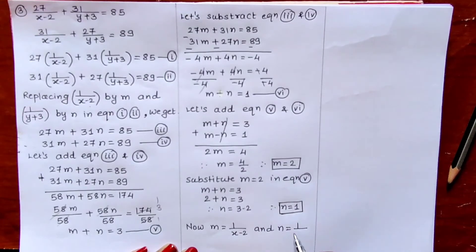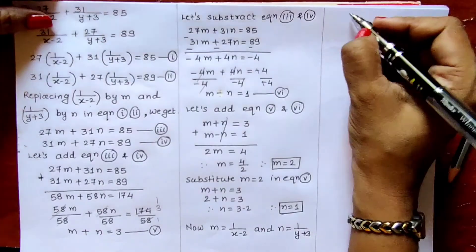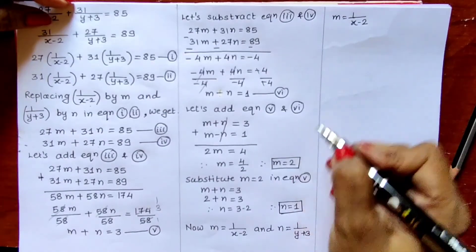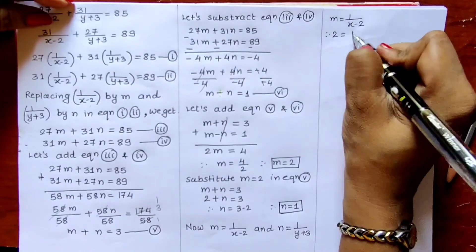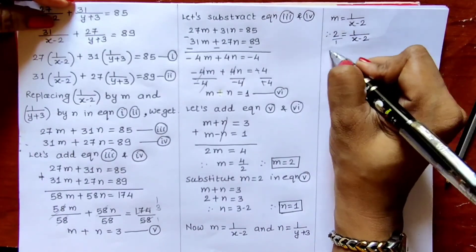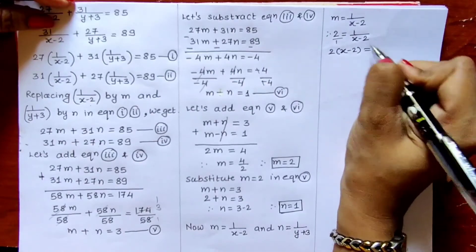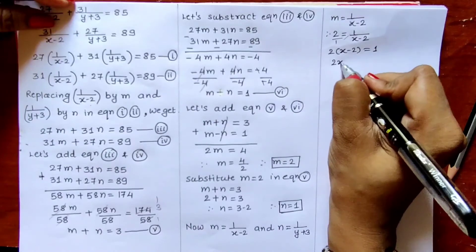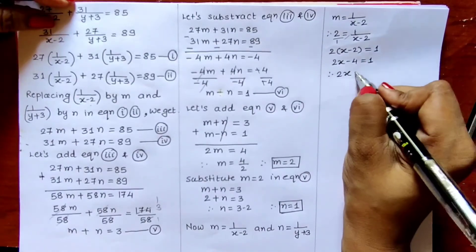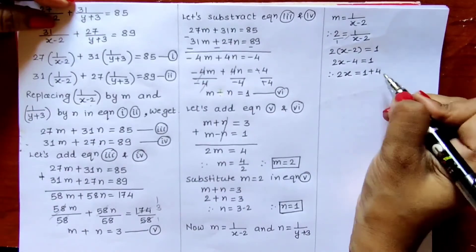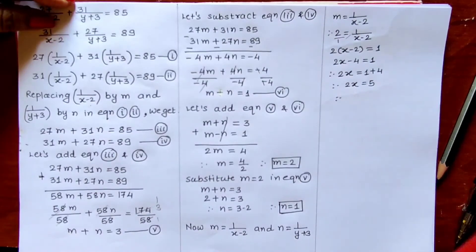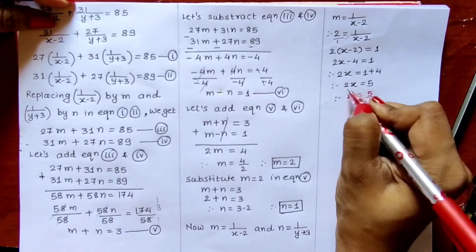In this way we solve these sums by replacing given variables with new variables, converting non-linear equations to linear equations, then solving by elimination or any other method. After getting values for the substituted variables, we must go back and find the values of the original variables x and y. Let us now solve the second sum.